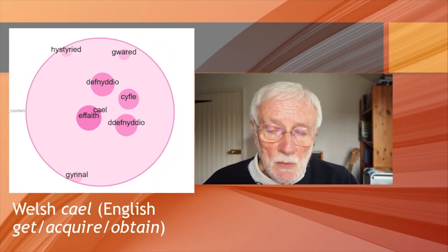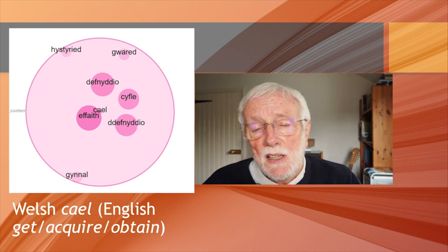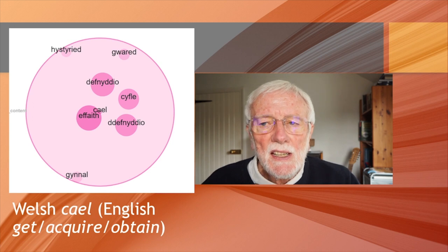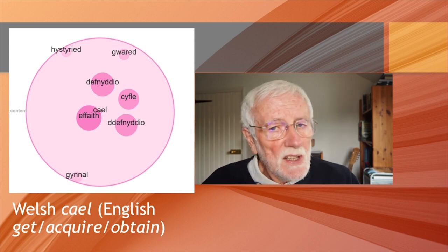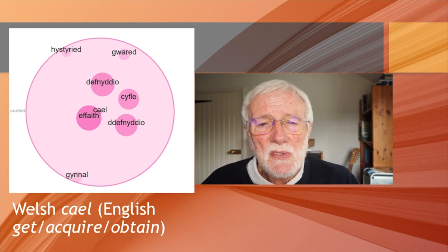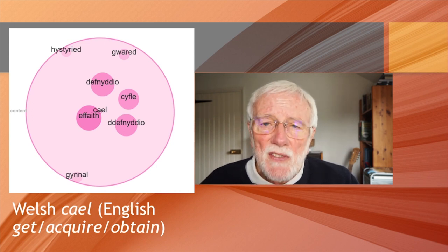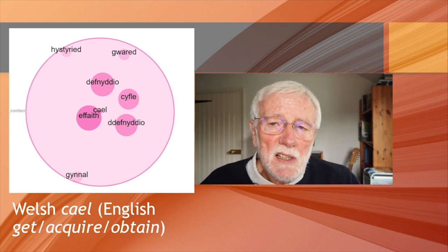Moving on, we can do exactly the same for Welsh, where we have the verb 'cael,' which again carries this notion of having, getting, obtaining. And now we see 'cael defnyddio' — and its mutant form 'defnyddio' — which means 'to get the use of,' 'to use in some way.' We have 'effaith,' which is 'effect,' and 'cyfle,' which is 'opportunity.' So what we've done here with these three languages is compared the same semantic notion and how it's realised in that language and its profile in terms of what it collocates most significantly with. Word profiling is extremely useful for cross-linguistic comparisons using comparable data sets.